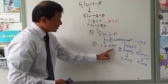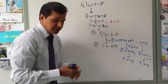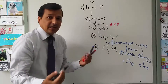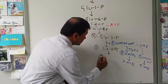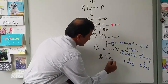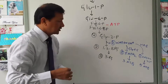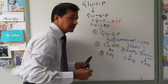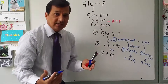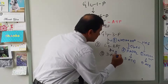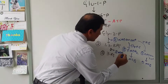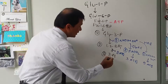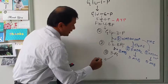Moving on with glycolysis: the two molecules of 1,3-bisphosphoglycerate undergo further reaction to produce two molecules of 3-phosphoglycerate. During this reaction, 2 ATPs are produced by substrate-level phosphorylation catalyzed by phosphoglycerate kinase.